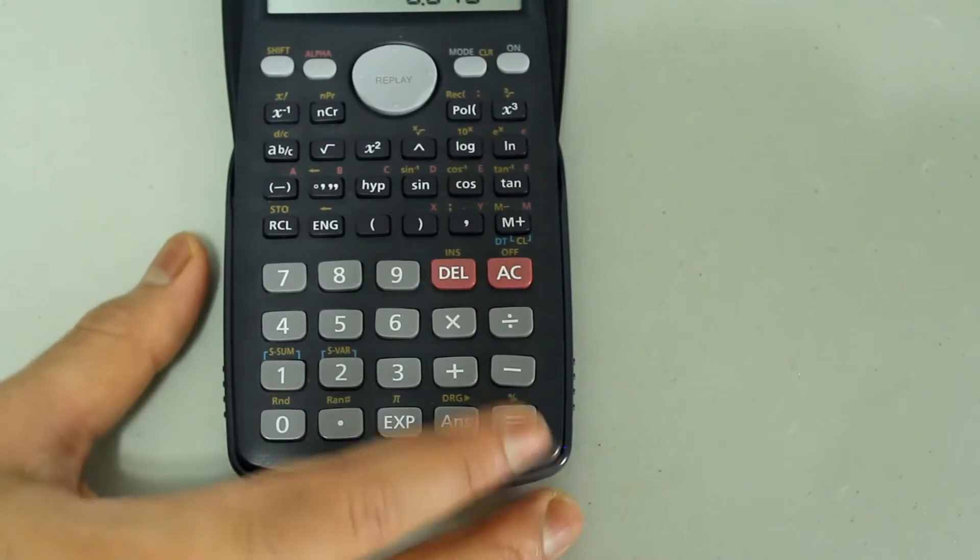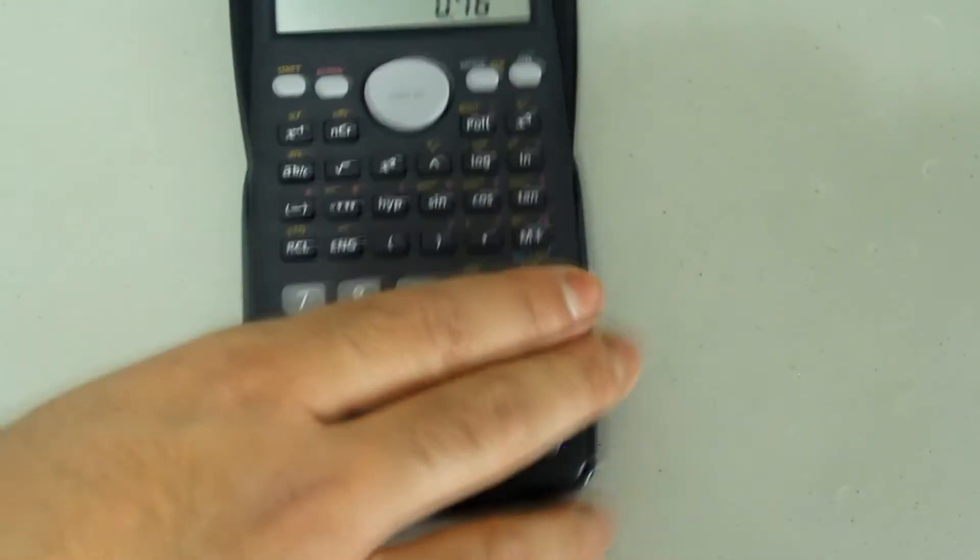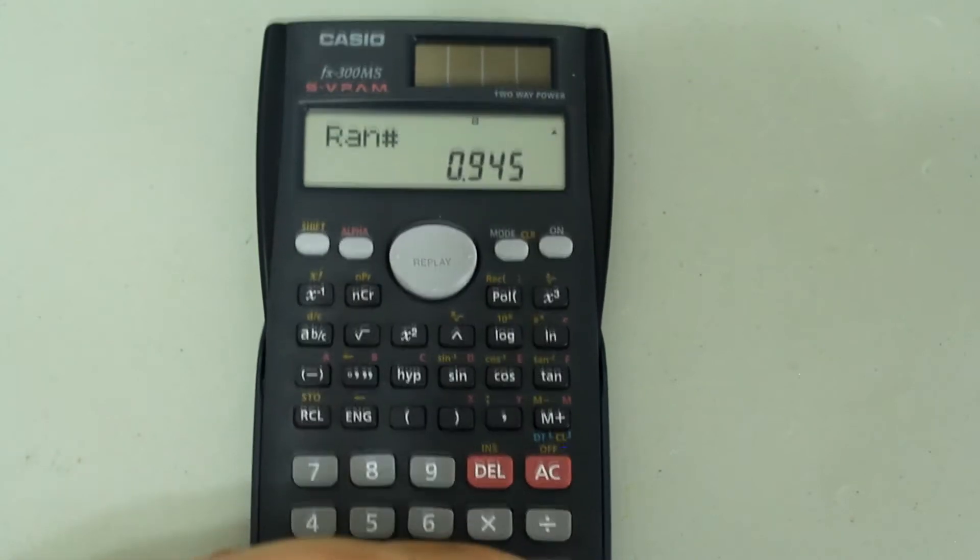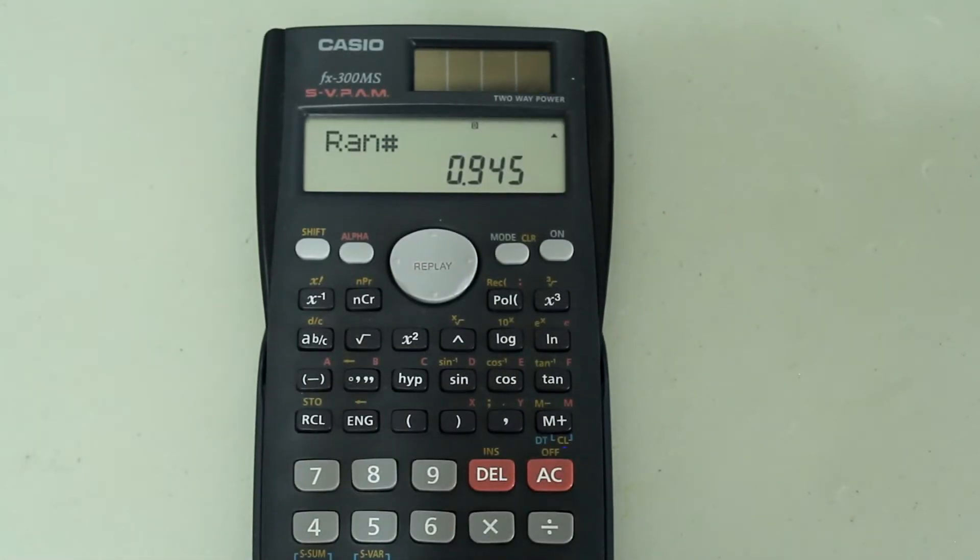If you keep pressing the equal sign, you'll notice that more numbers are generated. So if you want to generate numbers between 0 and 1, this is fine. You can just continue to press the equal sign and more numbers will be generated.